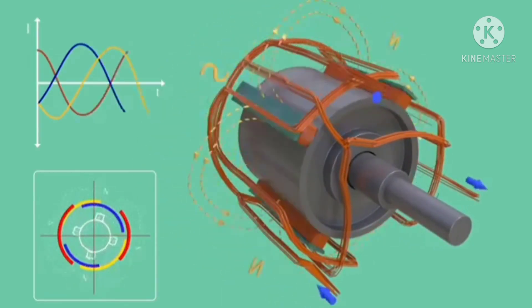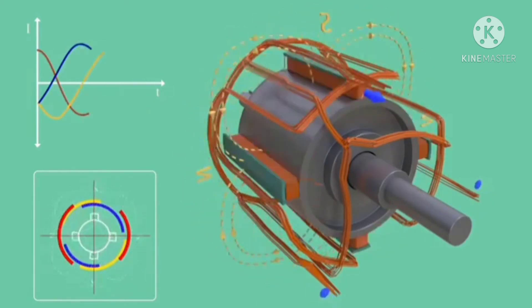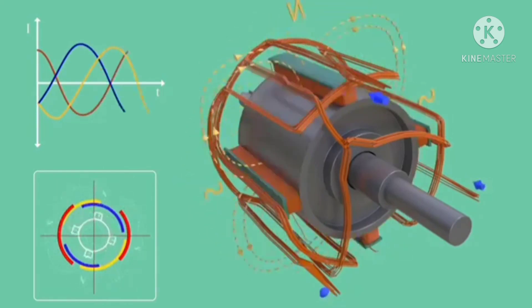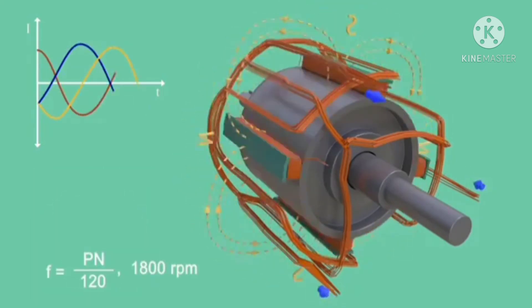It is clear from the equation that in order to produce 60 Hertz electricity, a four-pole rotor should run at a speed of 1800 rpm. Such high rpm will induce a tremendous centrifugal force on poles of the rotor, and it may fail mechanically over time.